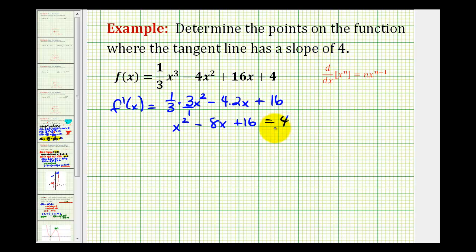We have a quadratic, so we'll go ahead and subtract four on both sides. So we'll have x-squared, minus eight x, this will be plus 12, equals zero.